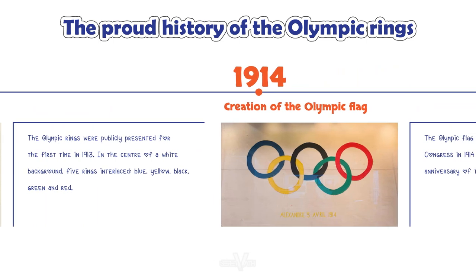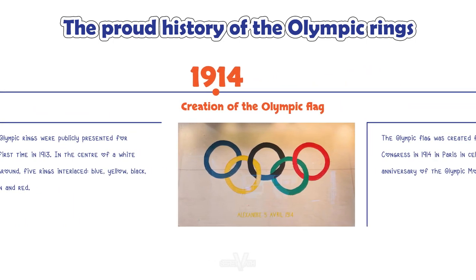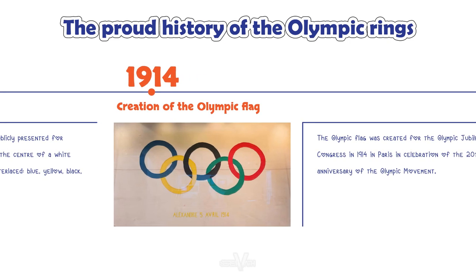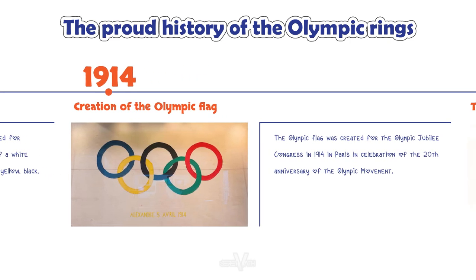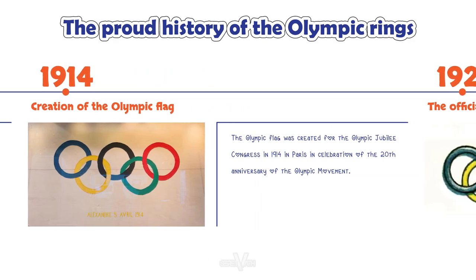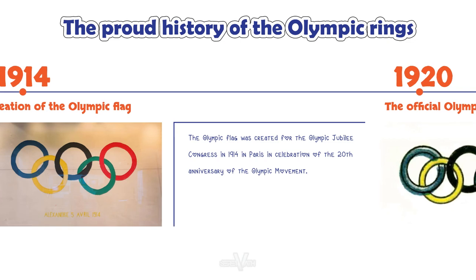1914: The Olympic Flag was created for the Olympic Jubilee Congress in 1914 in Paris, in celebration of the 20th anniversary of the Olympic Movement.